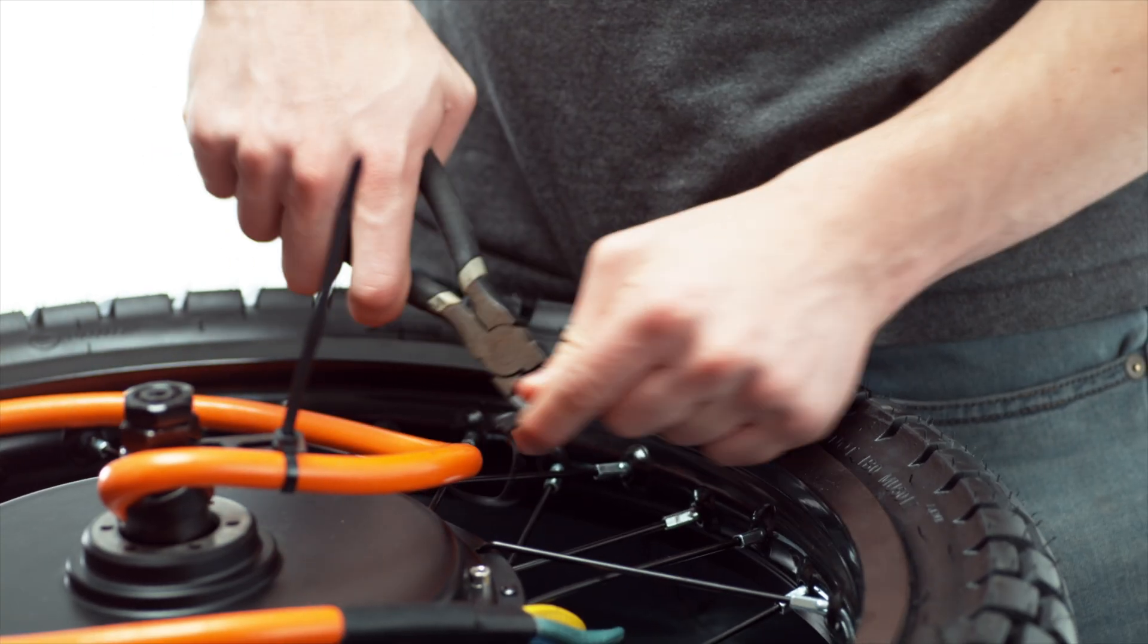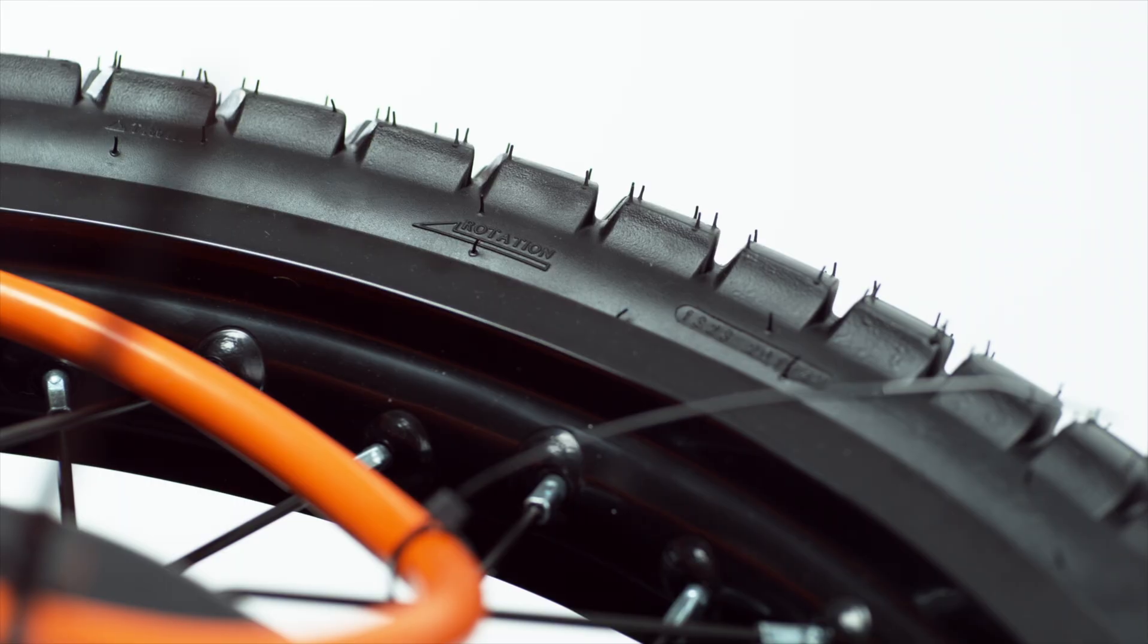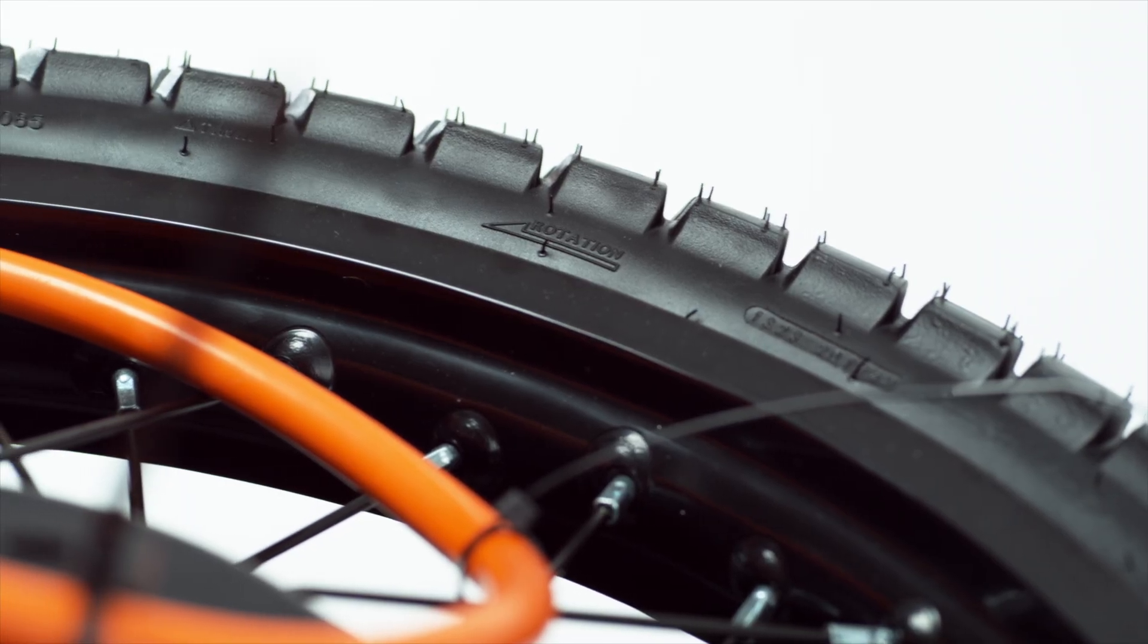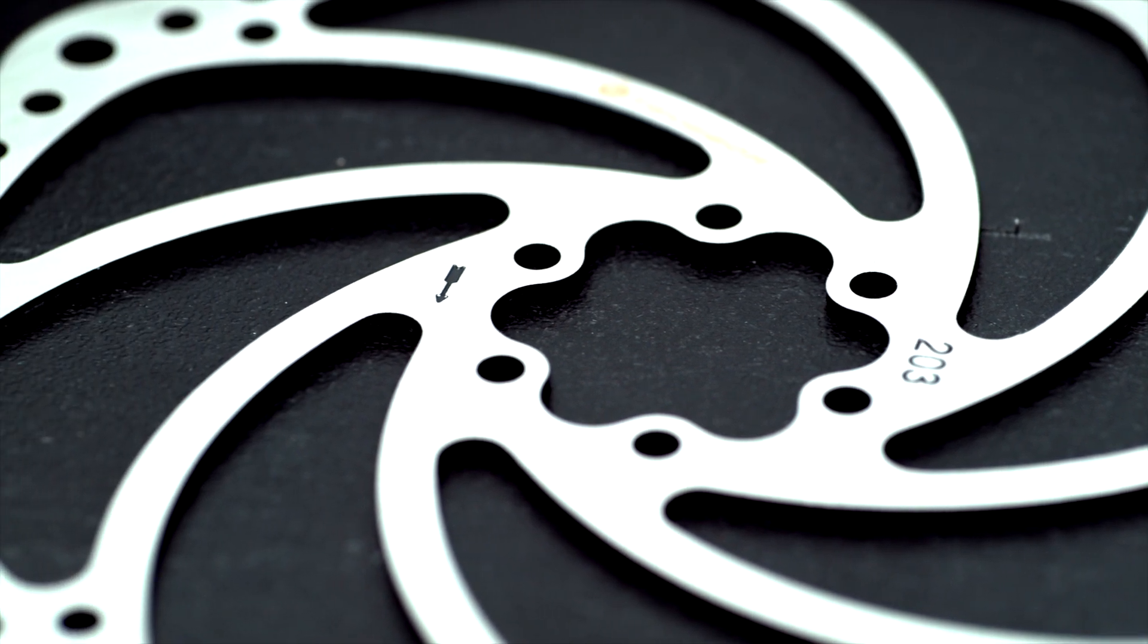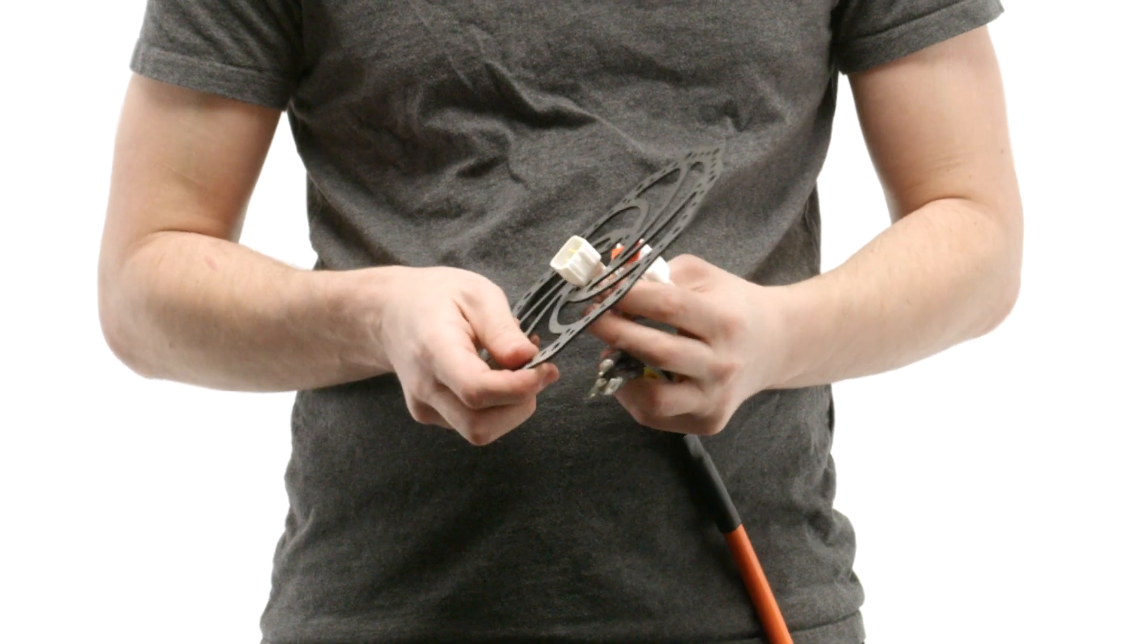So I'm going to go ahead and clip these zip ties and I need to remove all of these nuts. Now the wheel has an arrow on it that shows rotation direction and so does the brake rotor. You want to make sure to match the arrows up when you're mounting them. Feed all of the wires through the rotor.